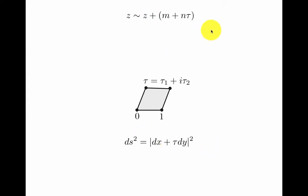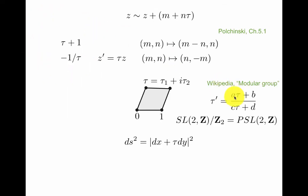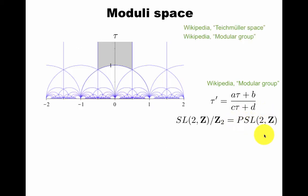How could we relabel this and still have the same torus? If we shift τ plus 1, that's a relabel with m and n. This is nicely described in Polchinski's book that I referred to at the beginning of this video. If you flip 1 over τ and switch the sign and you rescale z to z prime, then this is also relabeling. So we have two operations that give you the same torus back. The combined action of these generate the modular group. So a and b and c and d are integers, and the determinant ad minus bc is equal to 1. This is called PSL(2,Z), the modular group.